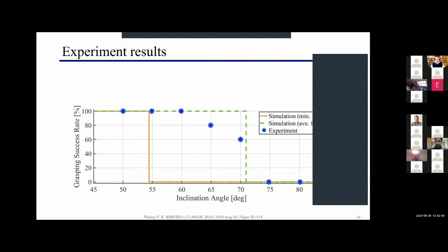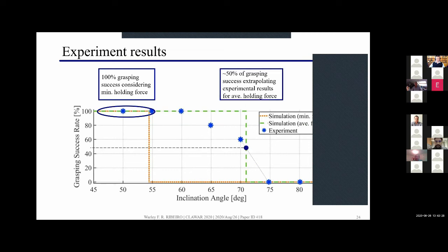Here I have the results of the experiments showing the blue stars in this graph that we can see the comparison for the grasping success rate for each inclination angle. Here we have a match between the experiments and simulations. If you compare first with the minimum holding force shown here by the orange dotted line, we obtained a hundred percent of grasping success for an inclination smaller than 55 degrees. For the average holding force here in the green dotted line we observed an approximate grasping rate of 50% for the angle of 70.9 degrees.